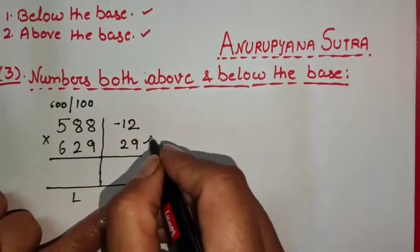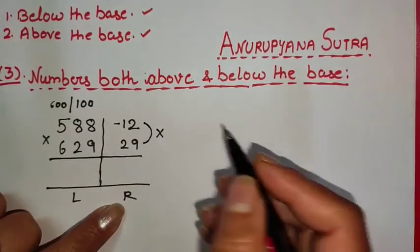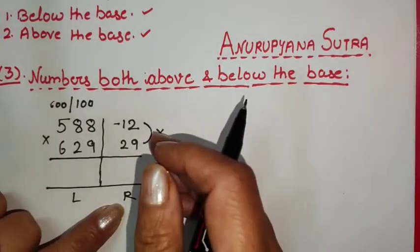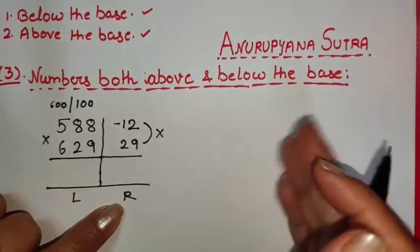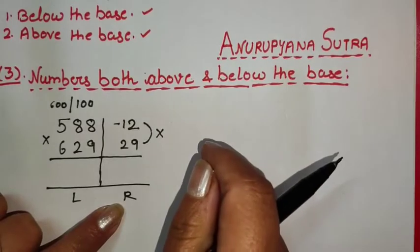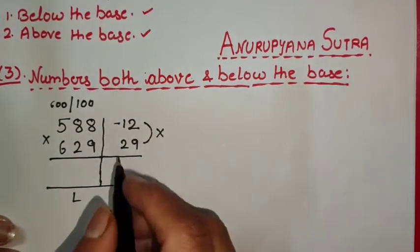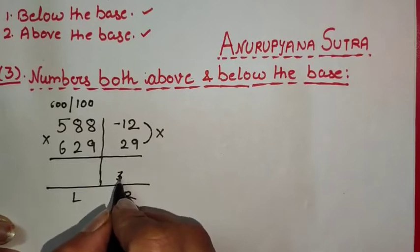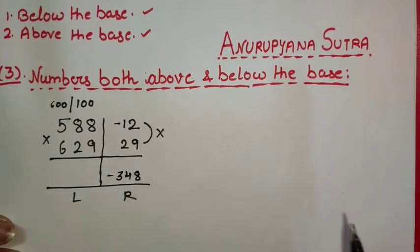To find the right-hand side of the answer, we need to multiply our deviations. A link to the fast multiplication technique for numbers 12 to 19 is in the i-button. The answer of this multiplication of −12 and +29 is −348.